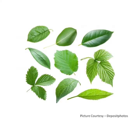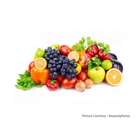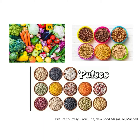Different plants have different shaped leaves. We get sweet, yummy fruits from them like mango, banana, apple, and strawberry. We also get food from plants like vegetables, pulses, grams, and cereals.